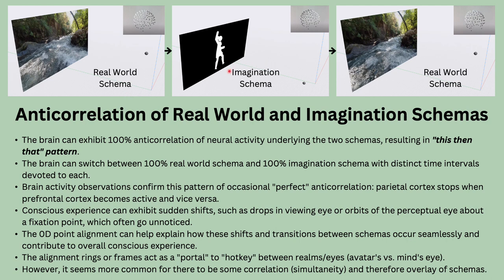This looks like real-world schema, imagination schema, real-world schema alternating. For the split moment you get imagination, you hotkey down to the mind's eye and wherever it happens to be, looking from some other vantage at something completely different — whatever's providing meaning to your thoughts. The alignment rings or frames would be a kind of portal to hotkey between schemas — the rings could stay the same orientation but viewed from a different position, painting the imagination schema.